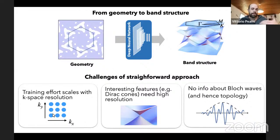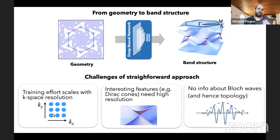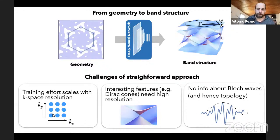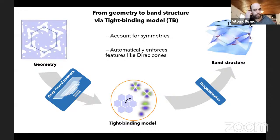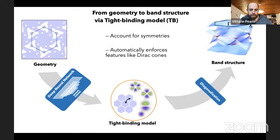Instead, our approach uses the neural network to define the free parameters of a tight-binding model, then diagonalizes this tight-binding model — which is much smaller than the original problem — to find the band structure. The most engaging part was designing a tight-binding model general enough to account for symmetry and automatically enforce robust features like Dirac cones.